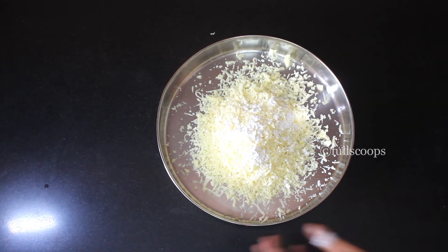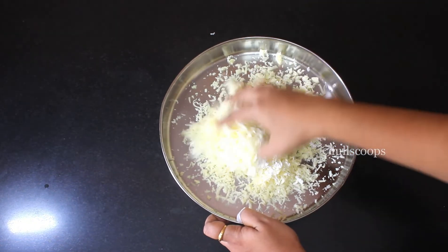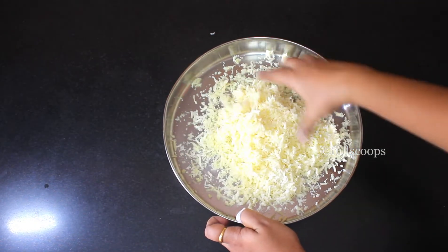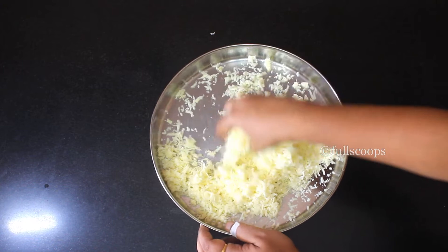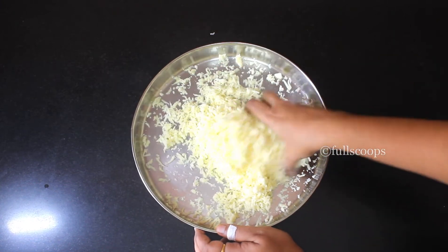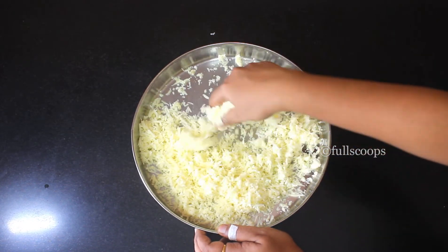Put the corn flour on the cheese and spread it nicely. Just mix the corn flour along with the cheese or toss the cheese nicely so that the corn flour spreads all over the grated cheese.